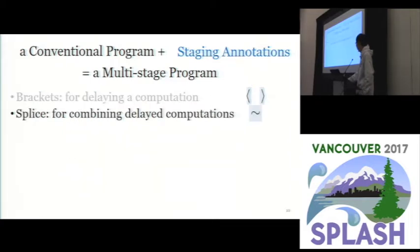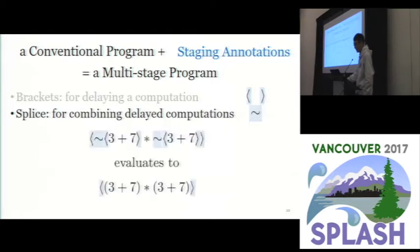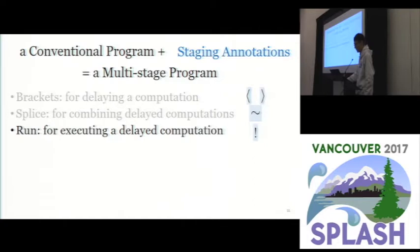The second one is called escapes, which is for combining delayed computations. For example, we could combine these two delayed additions. The third one is called run which is for executing a delayed computation. For example, we had this delayed addition before, if we execute it we get a computation result.